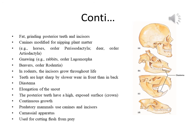Predatory mammals use canines and incisors for killing and tearing prey. In mammals of the order Carnivora, for example dogs and cats, the fourth upper premolar and first lower molars have a scissor-like shearing surface called the carnassial apparatus, which is used for cutting flesh from prey.